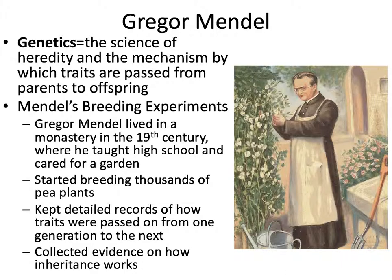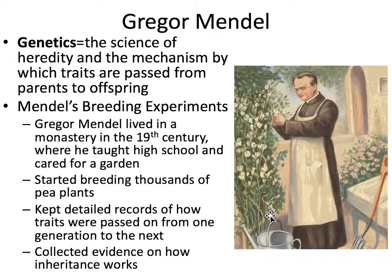Gregor Mendel was a monk. He lived in a monastery, taught high school, and also cared for the monastery garden. But he was also a scientist at heart, and he liked to do experiments with pea plants. He started breeding thousands of pea plants and kept detailed records of all of his crosses and how traits were passed from one generation to the next, basically coming up with a good explanation of how inheritance works.